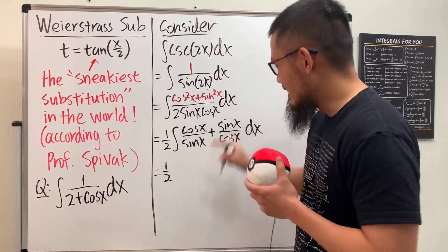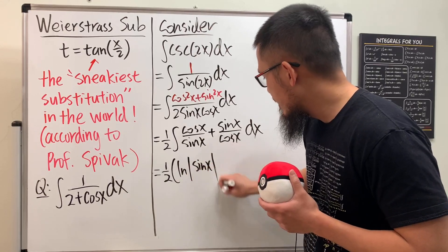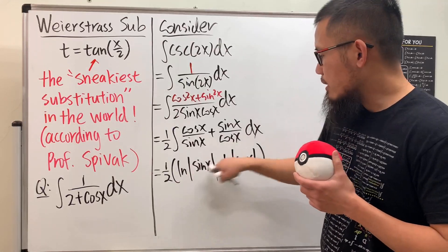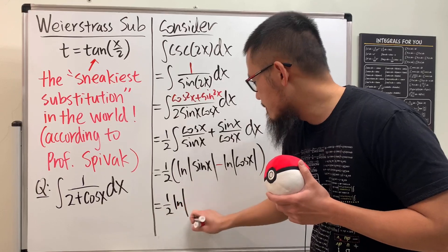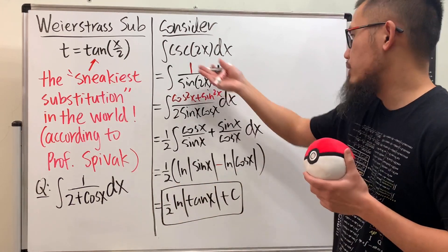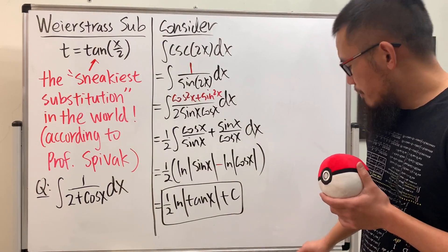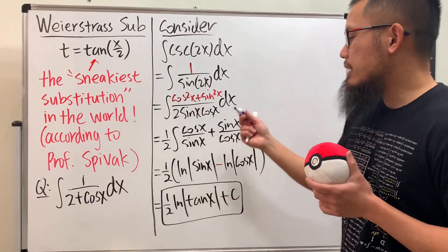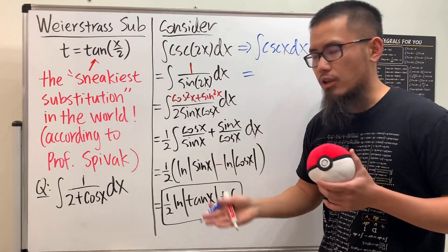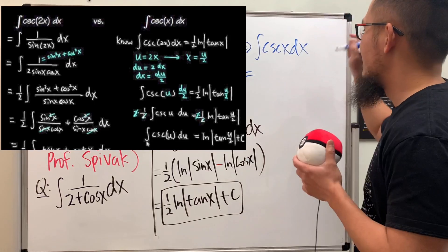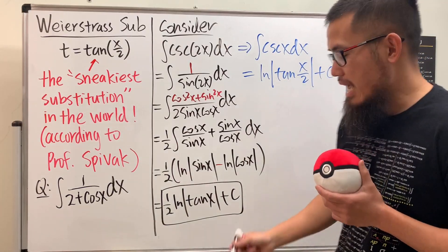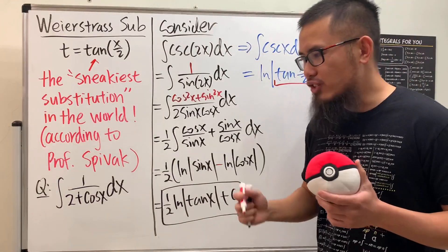Now let's integrate using u-substitution in our head. The first part gives ln|sin x| and the second gives minus ln|cos x|. We can combine the natural logs to get one-half times ln|sin x over cos x|, which is ln|tan x|. This gives us a way to integrate cosecant of 2x, and if you replace x with x over 2, you end up with ln|tan(x/2)| plus C.